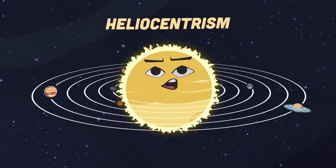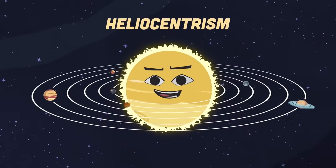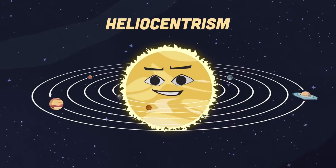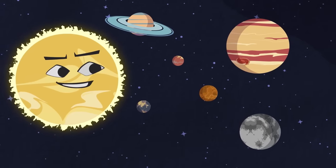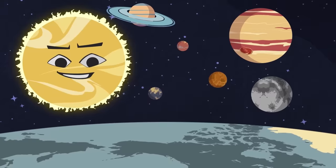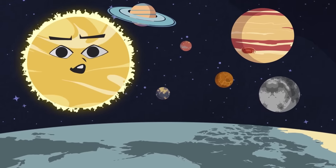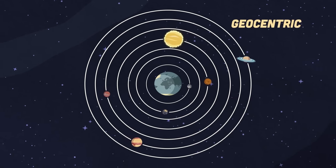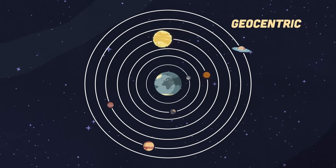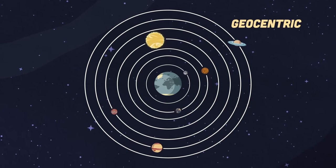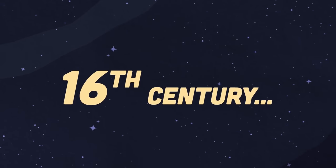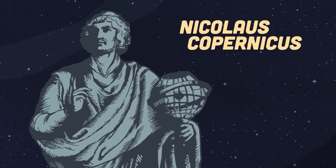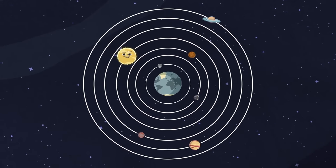One is heliocentrism — this is something you'll learn here. Who is Nicholas Copernicus? For over 1,500 years, ancient man thought the earth was the center of the solar system. This theory was called the geocentric model. But in the 16th century, a man named Nicholas Copernicus decided to rearrange things.